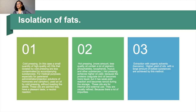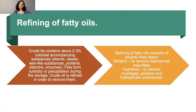The other method is extraction with organic solvents such as benzene, which achieves higher yield of oils but with a large amount of ballast substances. Crude fat contains about 2-3% colloidal accompanying substances such as sterols, waxes, wax-like substances, proteins, vitamins, and enzymes. Fats form turbidity or precipitation during storage, so crude oil is refined to remove them.